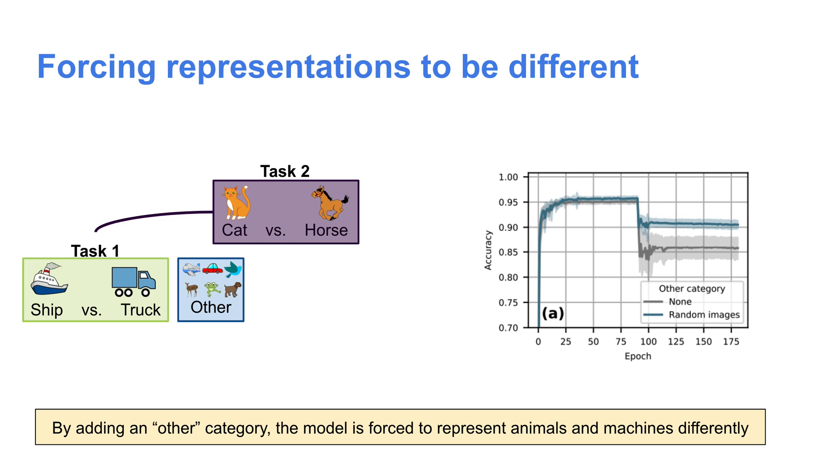The graph on the right shows that this is in fact the case. When we add the other category, forgetting gets significantly less severe. Just like the rotation example from a few slides ago, orthogonalizing representations using the other category can mitigate forgetting.